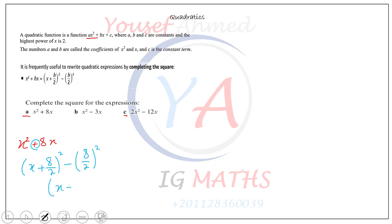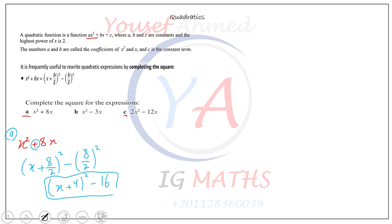So we get (x + 4)² − 16, since 8/2 = 4 and 4² = 16. This is the completed square form. If you expand it, you get back to the original expression, so always leave it in this form. We'll show how exam questions use this.